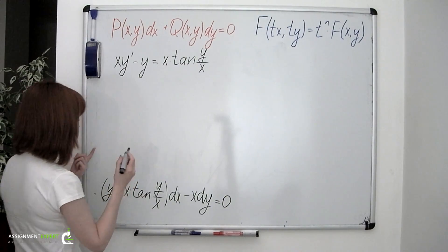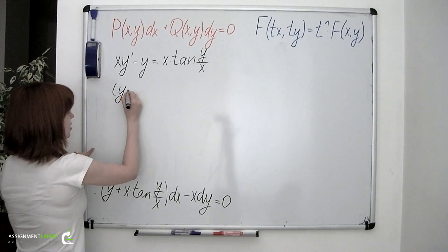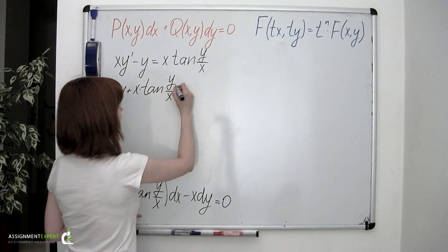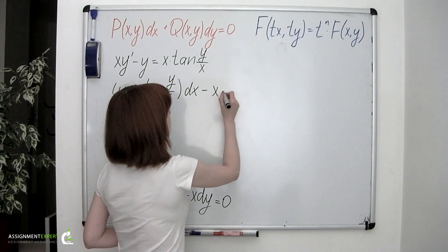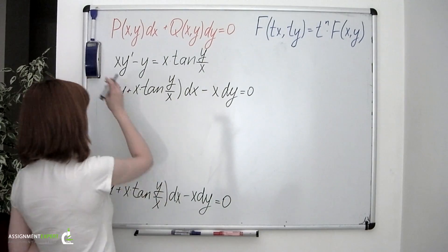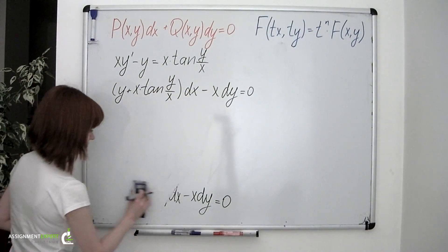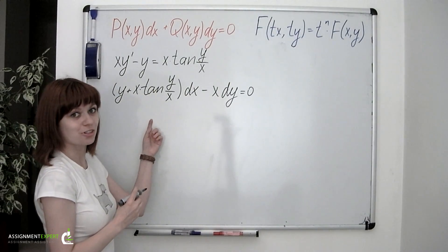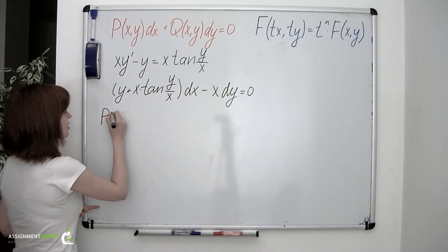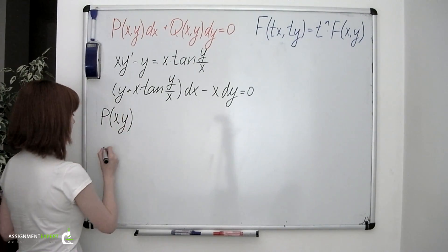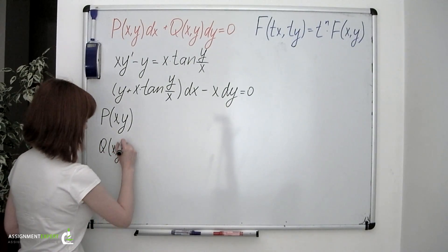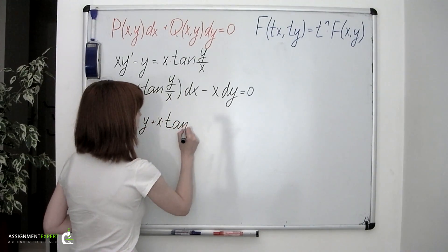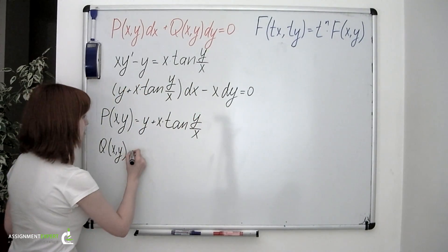So the equation we are dealing with is: y plus x times tangent of y over x, dx minus x times dy equals 0. Now we should check if this equation is homogeneous or not. To do this we need to consider the P of x, y and Q of x, y functions. Obviously, P equals y plus x times tangent of y over x, and Q equals negative x.